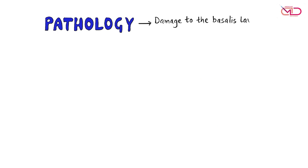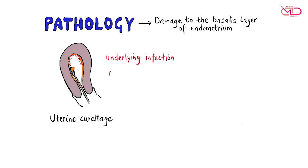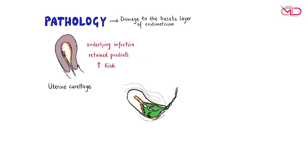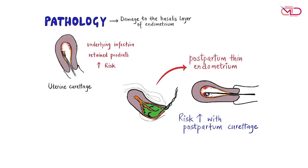Damage to the basalis layer of the endometrium can occur with procedures like uterine curettage done for abortions or abnormal uterine bleeding. Underlying infection and retained products of conception further increase the risk of adhesion formation. These factors operate more often in the immediate postpartum state when the endometrium is thin and inactive, so curettage done in the immediate postpartum period particularly increases the risk.